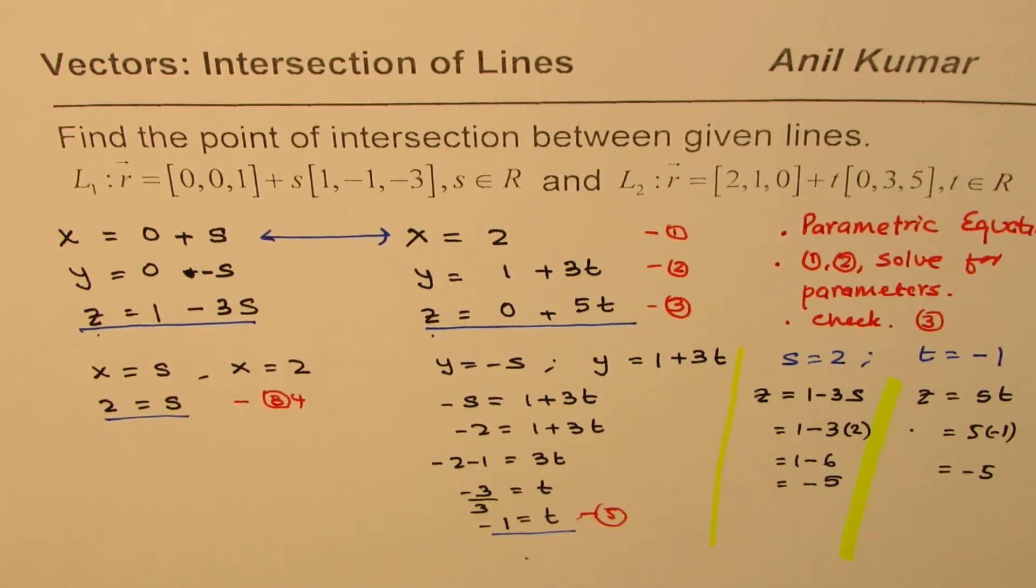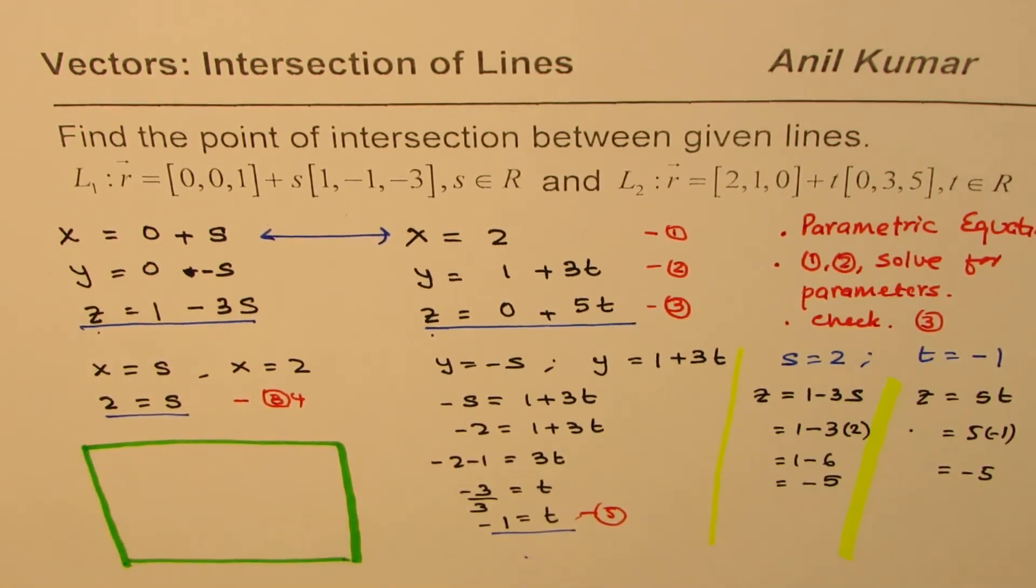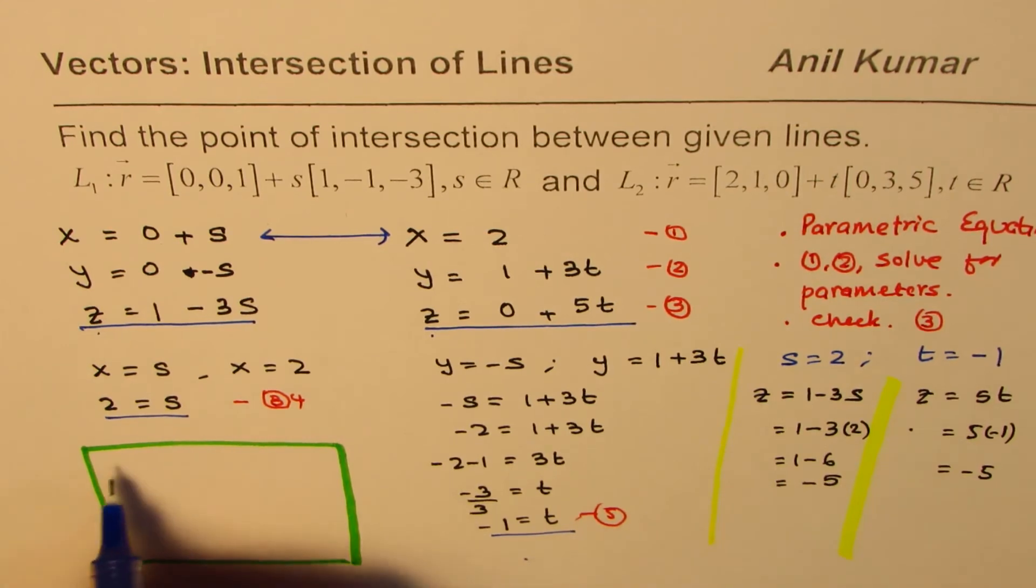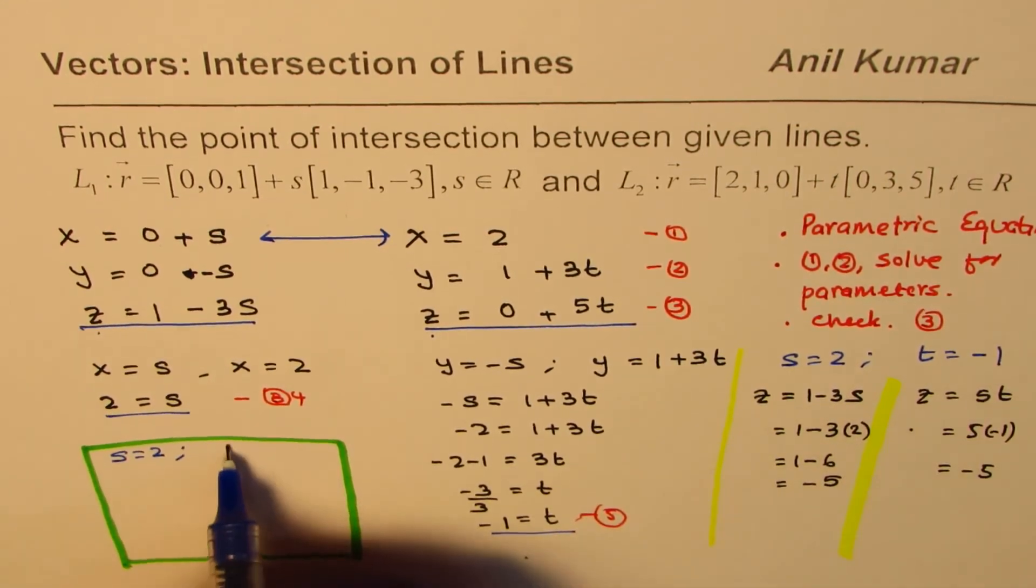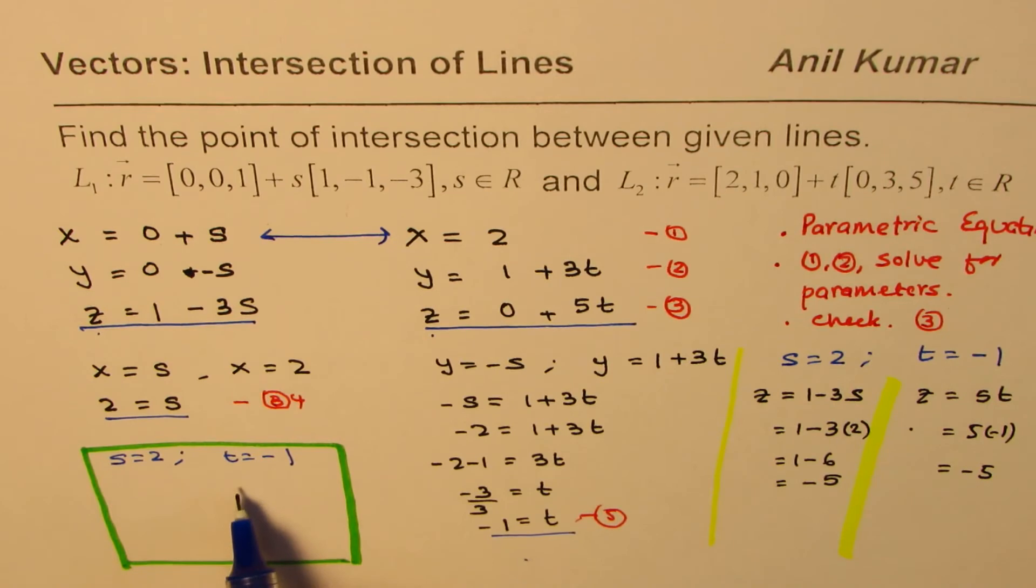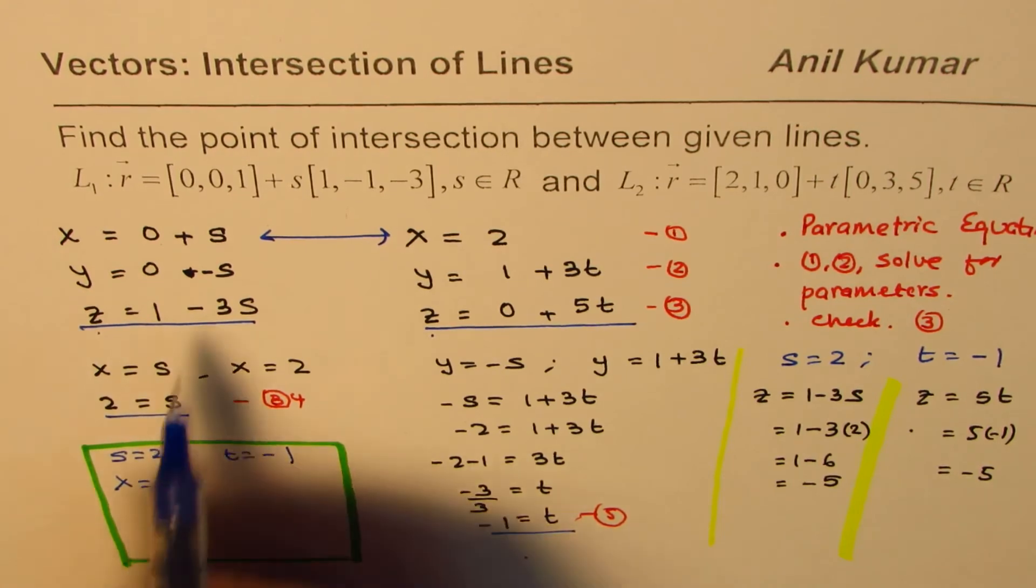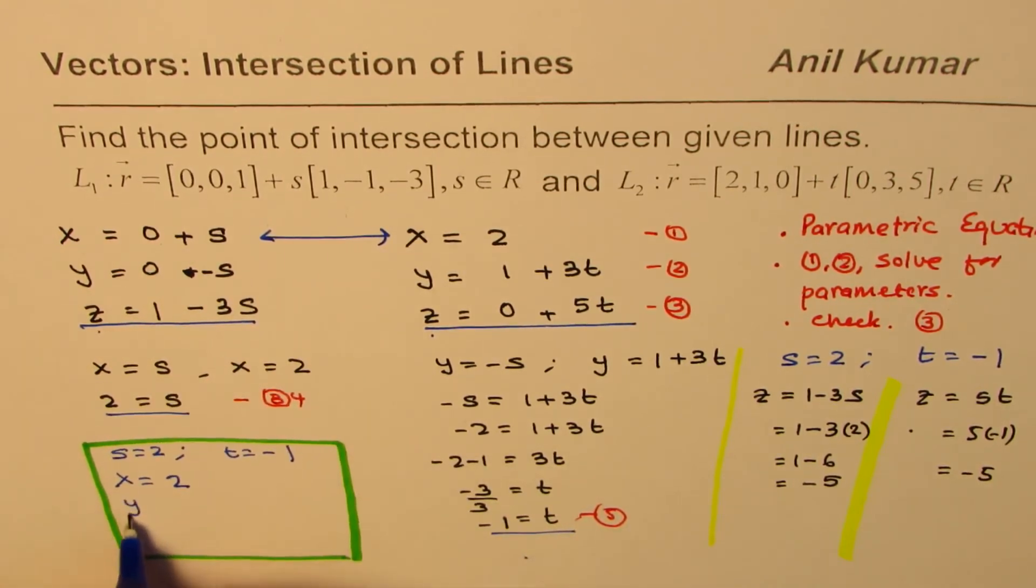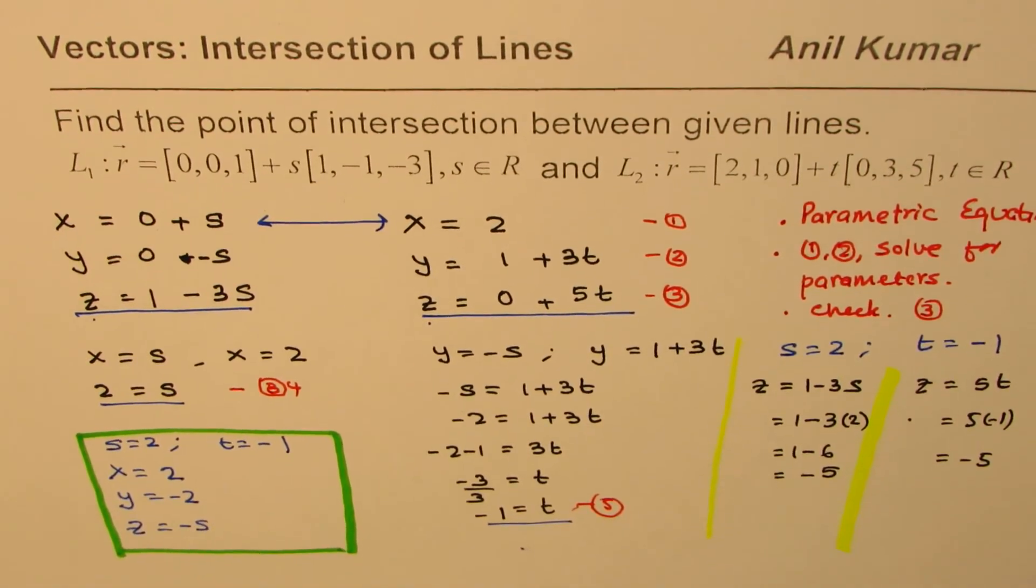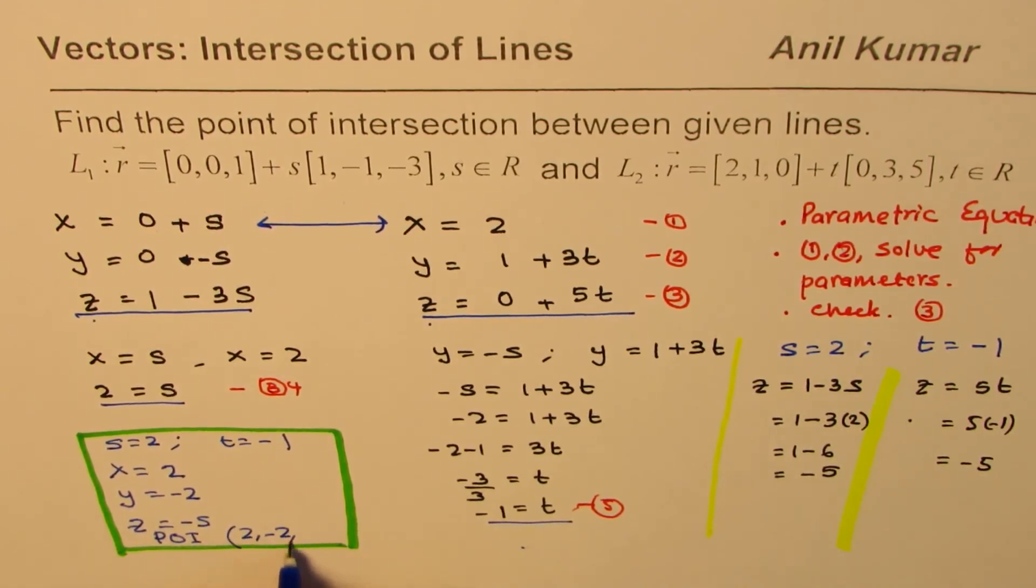And now we can actually write point of intersection. So let me use this space to write down the point of intersection, the final answer. So we know that s is equal to 2, and t equals minus 1. We could use any set to find the values of the point since it is exactly same. So we have x equals 2, y equals minus 2, and z equals minus 5. And therefore, we have point of intersection, which is (2, -2, -5). So that is the answer for us.